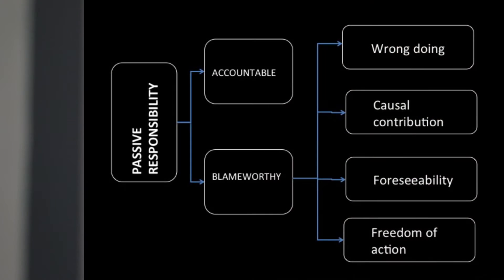Responsibility has two aspects to it. It can be an active type of responsibility or a passive type of responsibility. Responsibility is passive if the person who is held responsible is accountable for an action or decision taken. If you are held responsible for an action or decision that you took in your engineering capacity and you are not able to give a satisfactory argument for your actions, then you are deemed blameworthy. In order to be blameworthy, four criteria must apply.